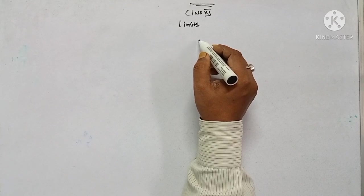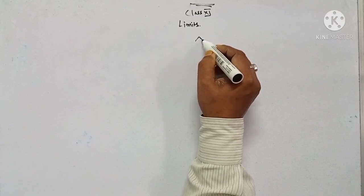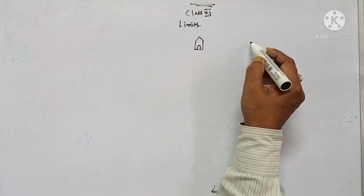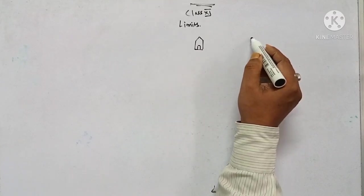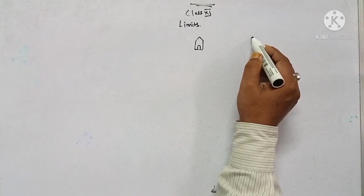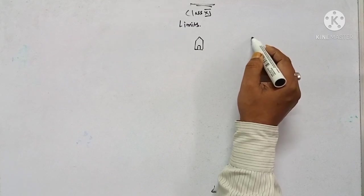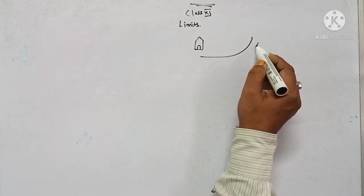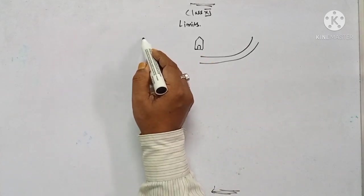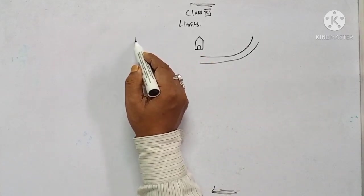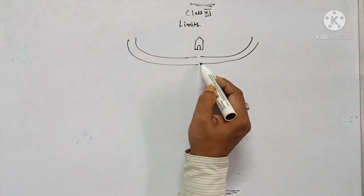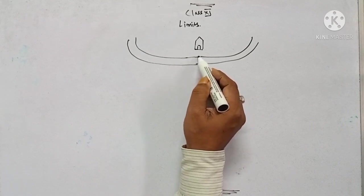Suppose this is your house. There is one road that comes from the right side and there is another road which comes from the left side.